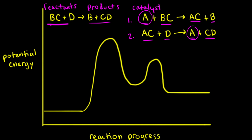Something else that's not a reactant or a product is AC. Notice how AC was generated in the first step of our mechanism, and then AC is used up in the second step of the mechanism. Therefore, AC must be the intermediate for this reaction.